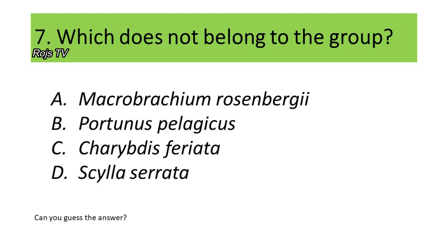Number 7. Which does not belong to the group? A. Macrobrachium rosenbergii, B. Portunus pelagicus, C. Charybdis feriata, D. C. lacerata. Can you make a guess?